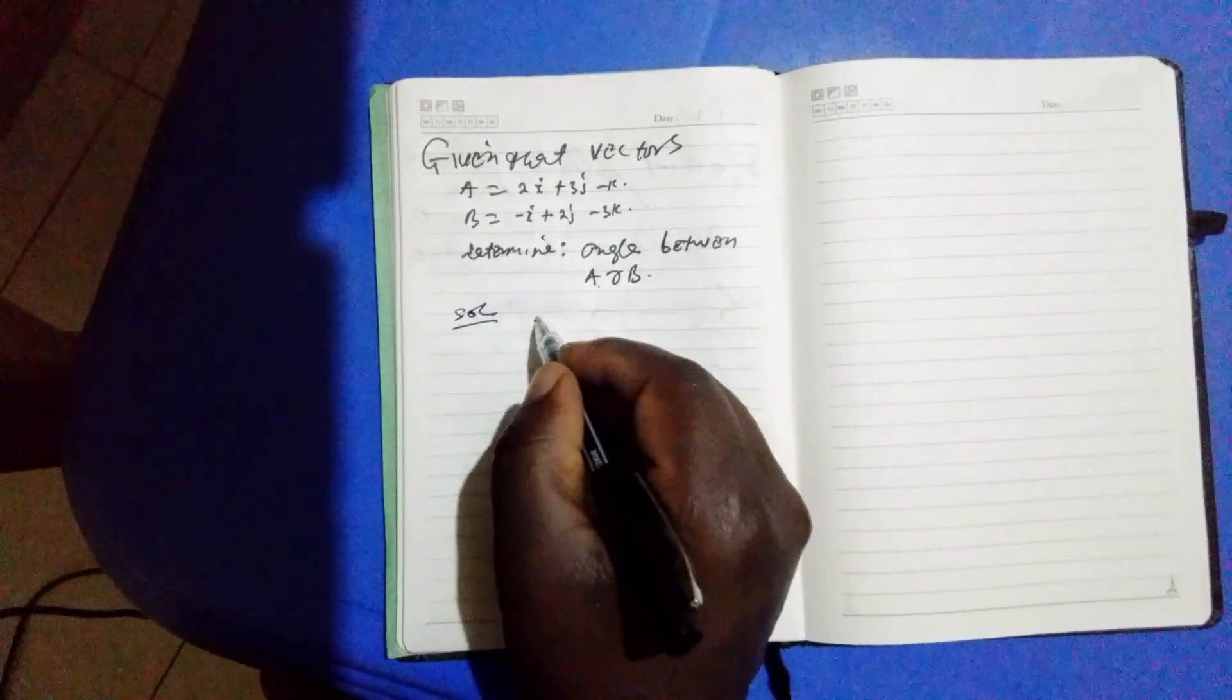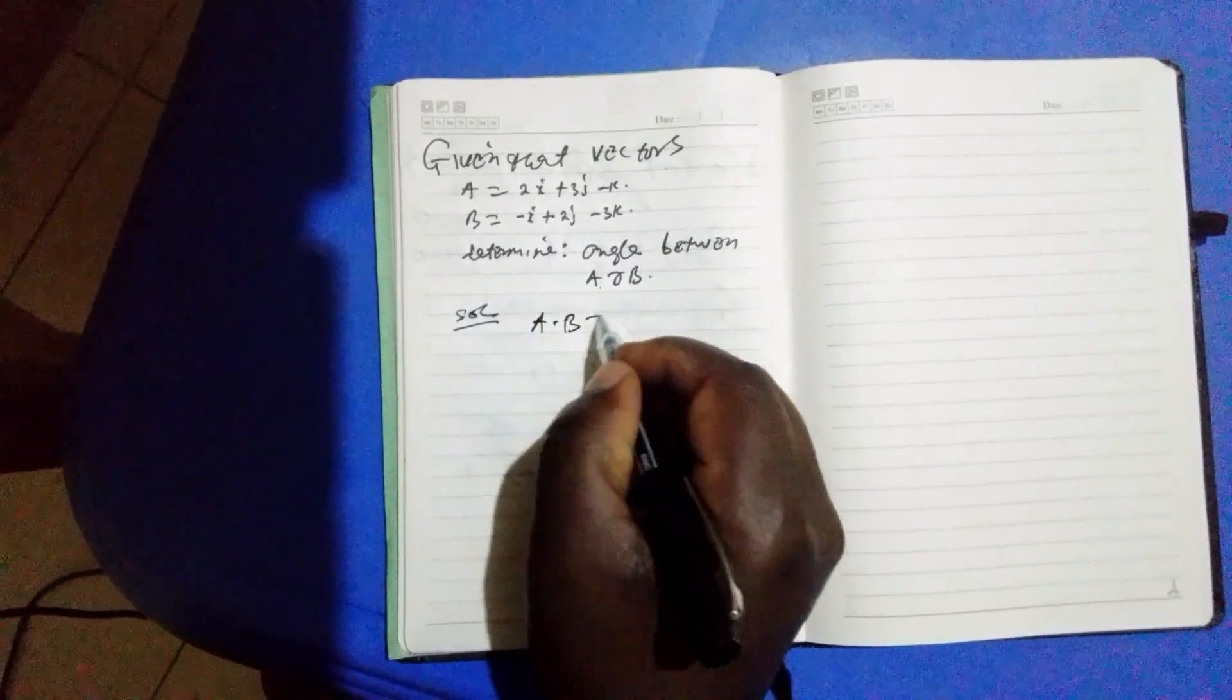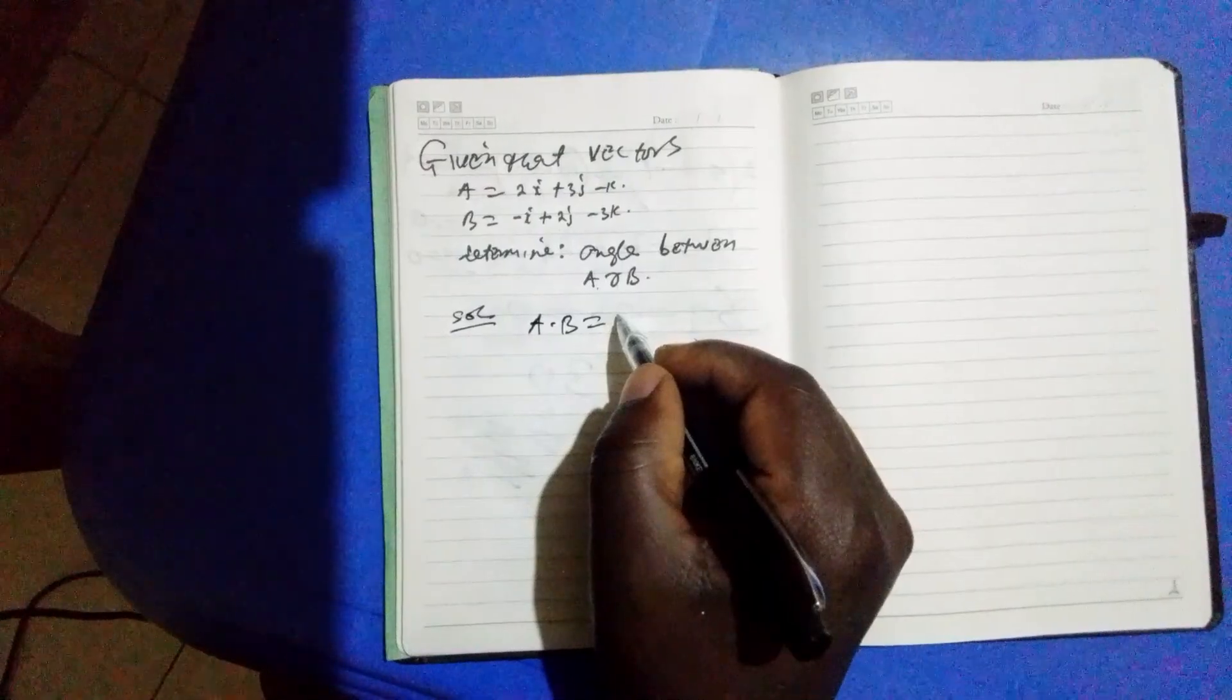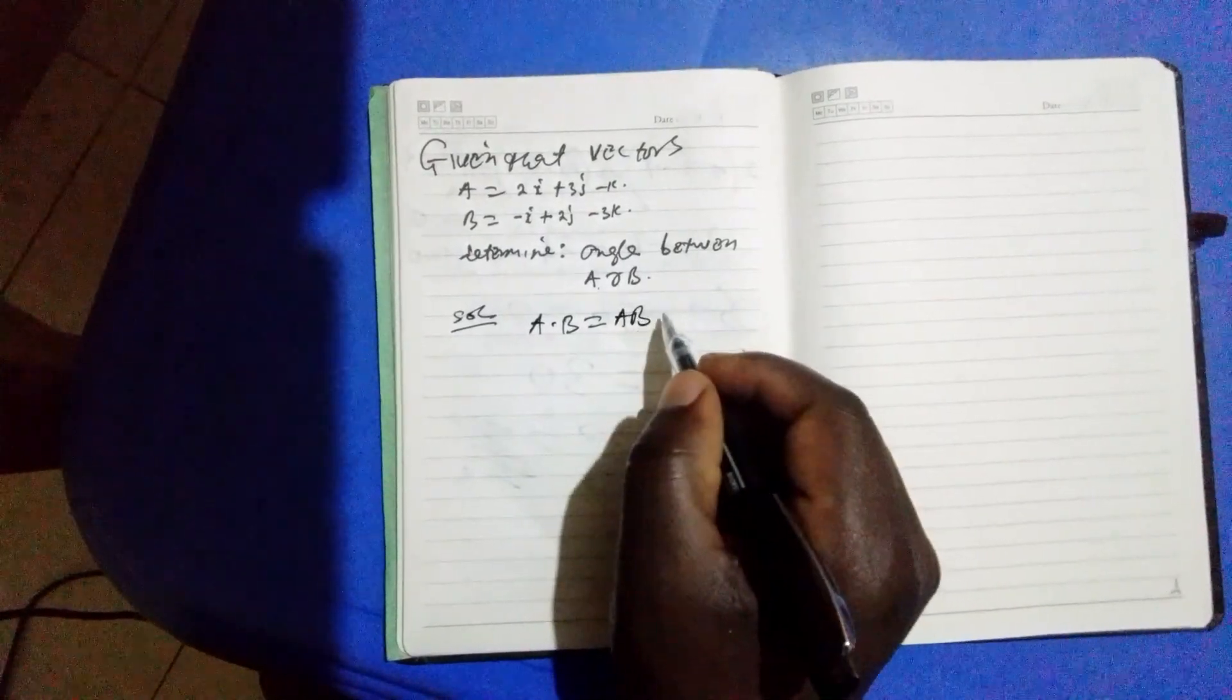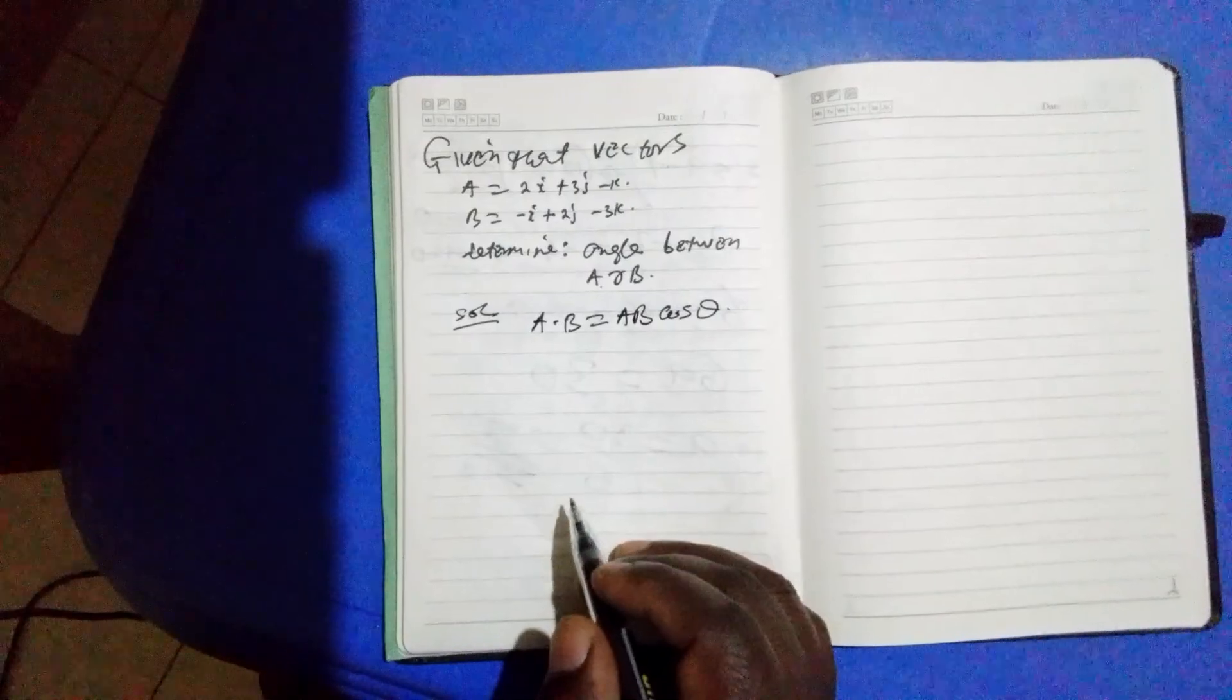Now we know that a dot b is given by a, b, cos theta.